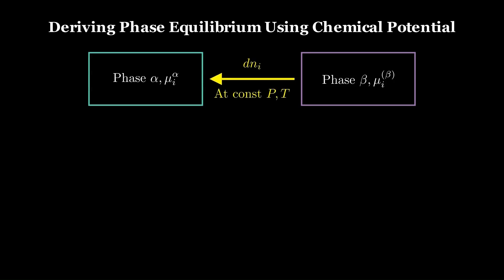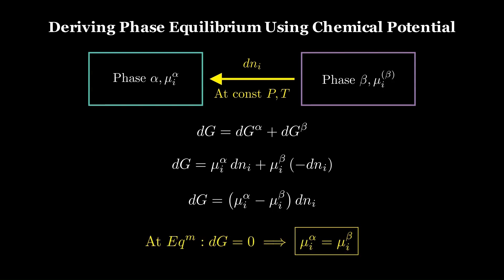Let's derive the phase equilibrium condition directly from Gibbs free energy. Consider two coexisting phases, alpha and beta, with chemical potentials μ_alpha and μ_beta. If we transfer an infinitesimal amount of species i from beta to alpha at constant T and P, the total Gibbs free energy change is equal to dG_alpha plus dG_beta. Based on our definitions, we can simplify this equation where dG equals (μ_alpha minus μ_beta) times dn_i. At equilibrium, any allowed infinitesimal transfer should not change for arbitrary dn. This requires dG equals 0, implying μ_alpha equals μ_beta.